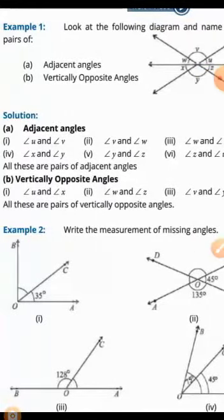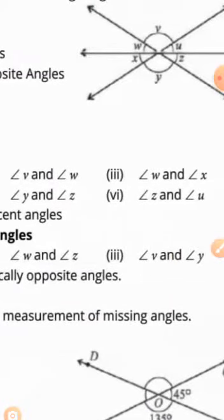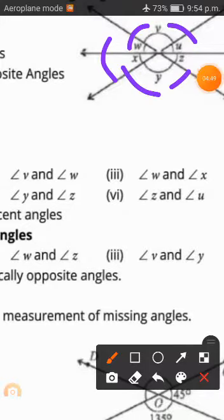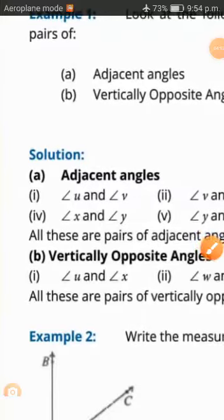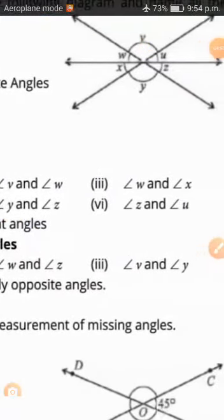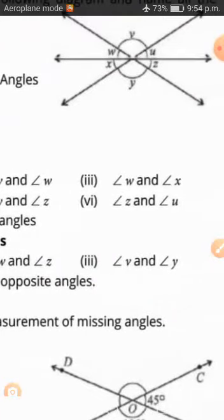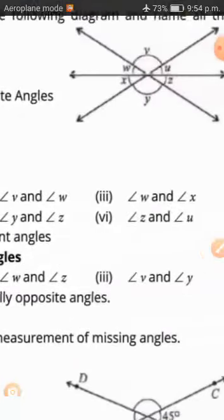So the adjacent angles: U and V are neighboring, next to each other — these two are adjacent. Then Y and W, then W and X, then X and Y, then Y and Z, then Z and W. Also: U and V, V and W, W and X, X and Y, Y and Z, Z and U.